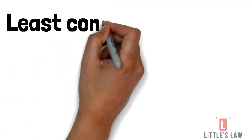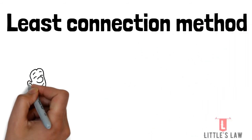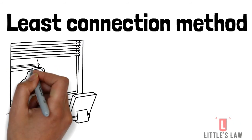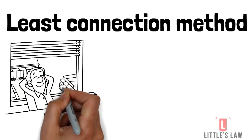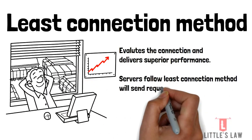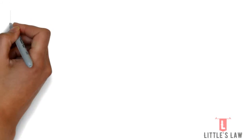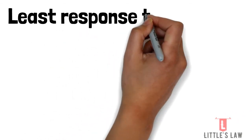The second algorithm is the least connection method. Whereas round robin does not account for the current load on a server, the least connection method does make this evaluation. As a result, it usually delivers superior performance. The virtual servers following the least connection method will seek to send requests to the server with the least number of active connections.